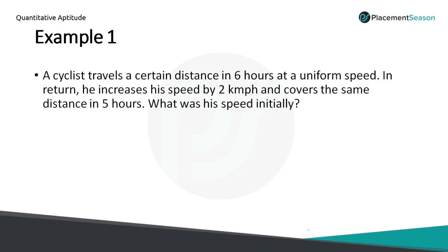A cyclist travels a certain distance in 6 hours at uniform speed. In return, he increases his speed by 2 km per hour and covers the same distance in 5 hours. What was his speed initially?